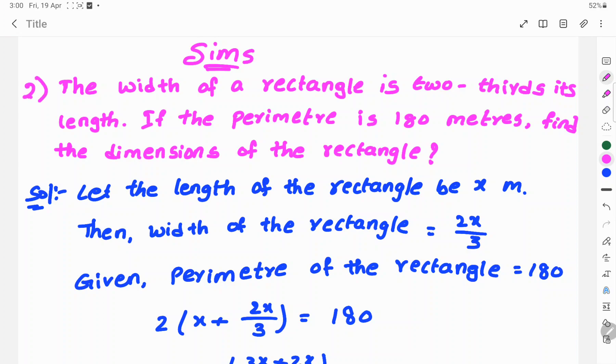Let's see the solution. Let the length of the rectangle be x meters. Then width of the rectangle is 2x by 3. Given, perimeter of the rectangle is equal to 180 meters.